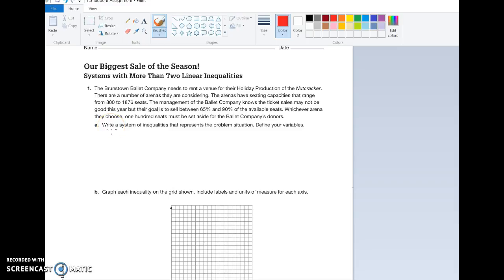Well, I think that the X variable is the available seats, meaning however many seats are available in the arena we choose. Depending on the arena or the theater, there may be 1,800 seats or there might be 1,876 seats. So there's a range between 1,800 and 1,876. So I'm just going to say that X is going to be greater than or equal to 1,800 seats. And X is also going to be less than or equal to 1,876 seats. So that's our first thing, alright?